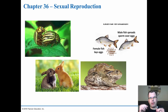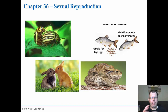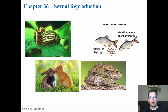Asexual reproduction is typically a clone of the parent, so you don't get any genetic diversity, but you can produce large numbers very quickly. Sexual reproduction allows you to mix the genes, requiring separate sexes, and produces a variety of offspring, which allows for better survival during environmental changes. This is why sexual reproduction has been the go-to in higher-level vertebrates and even invertebrates.